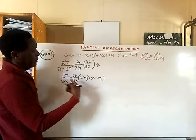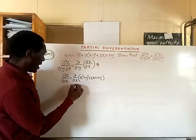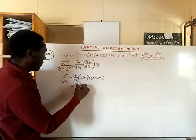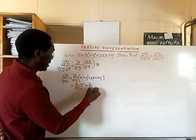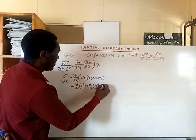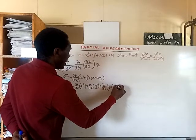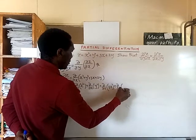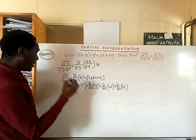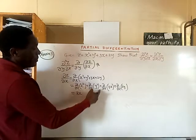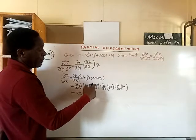We take the partial derivative with respect to x, where y is treated as a constant. So we have: partial derivative with respect to x of x², plus partial derivative with respect to x of y², plus partial derivative with respect to x of 3x, plus partial derivative with respect to x of 2y. We differentiate each term in the normal way. The first term gives us 2x, and the second term — differentiating y² with respect to x where y is a constant — gives 0.